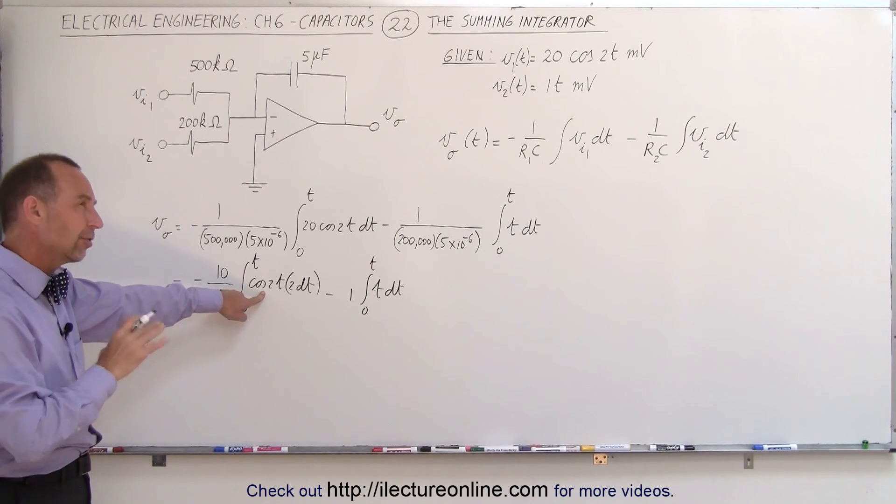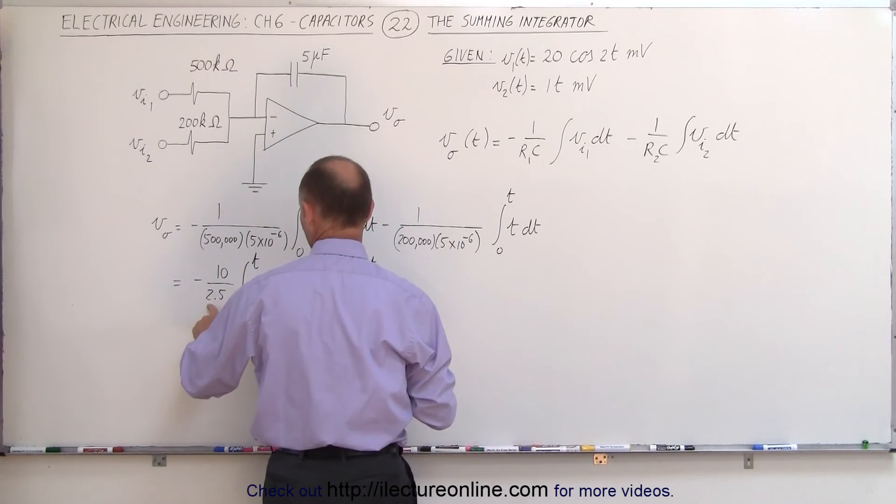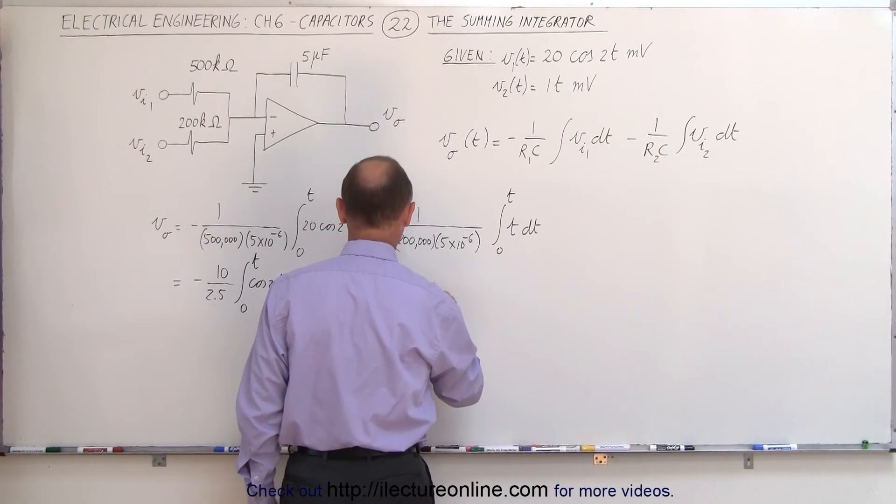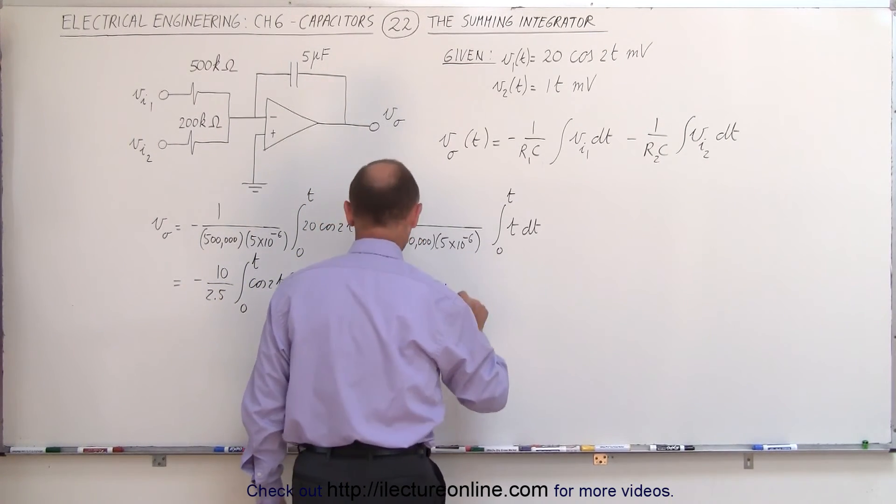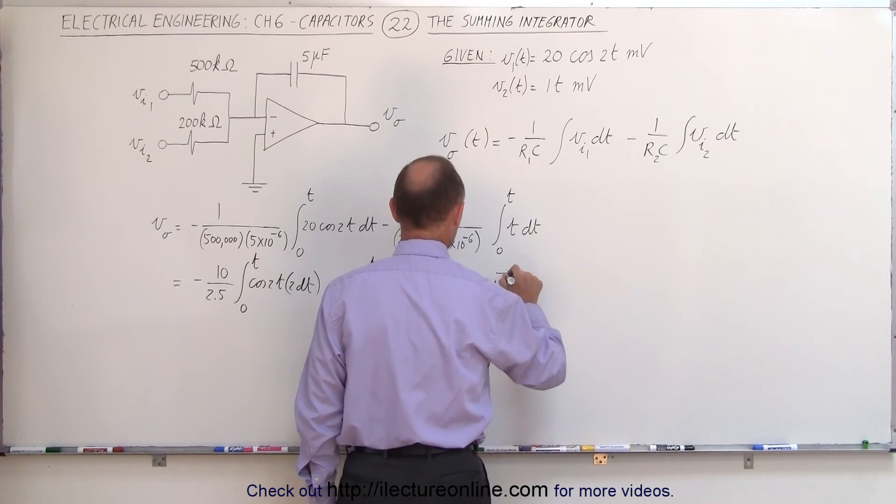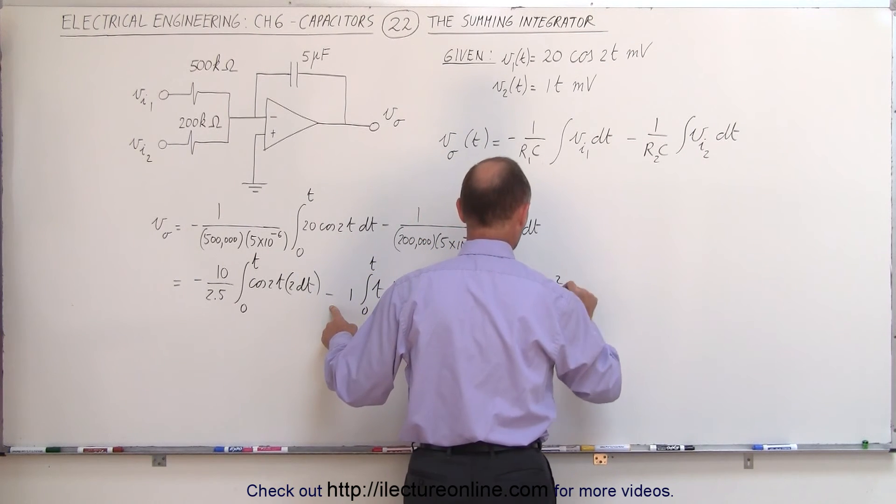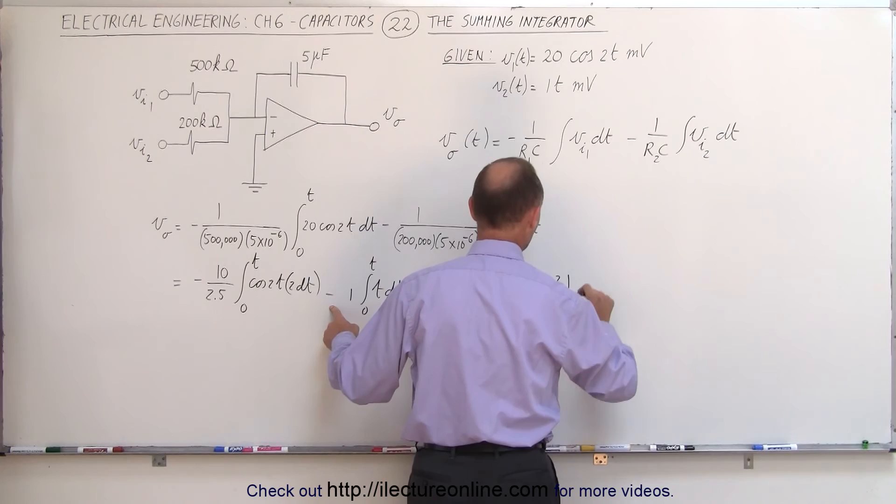The derivative of the sine is the cosine, so therefore the integral of the cosine is the positive sine, so 10 divided by 2.5 is 4, this is minus 4, times the sine of 2t, evaluated from 0 to t, minus t squared over 2, evaluated from 0 to t.